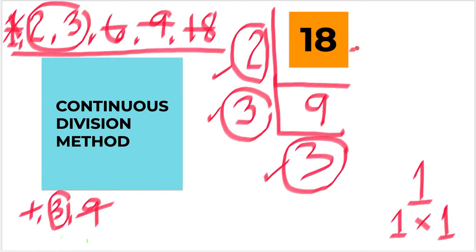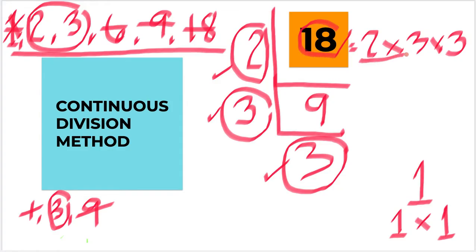So the prime factors of 18 are 2, 3, and 3. We can say that 2 times 3 times 3 equals 18: 2 times 3 is 6, times 3 is 18.